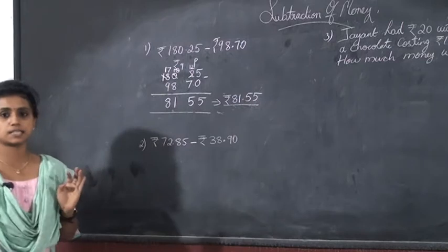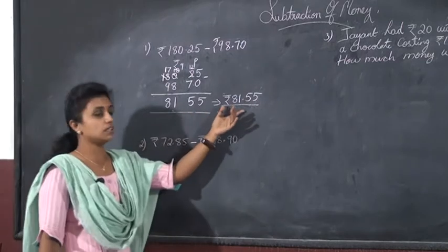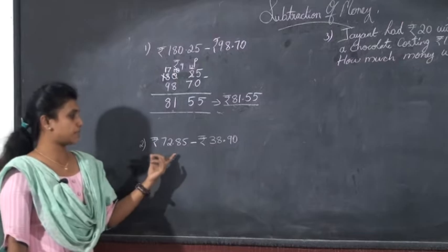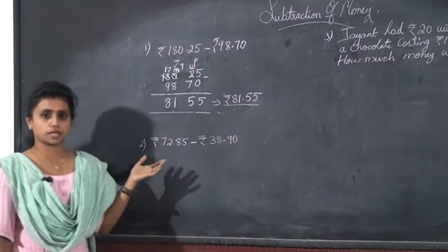So, this is clear children? This is the way of subtracting the money. Okay. Now, we learn the other method. We learn how to subtract the money. Like this.